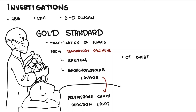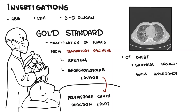A CT chest is fundamental in suspected pneumonia cases. CT classic findings include bilateral ground glass changes — you can see hazy-type changes in both lobes of the lung. Hilar or mediastinal lymphadenopathy is rare in Pneumocystis pneumonia.